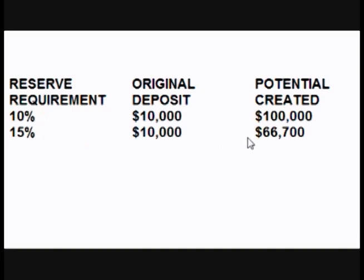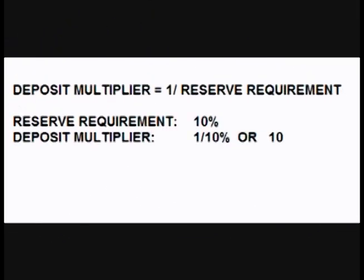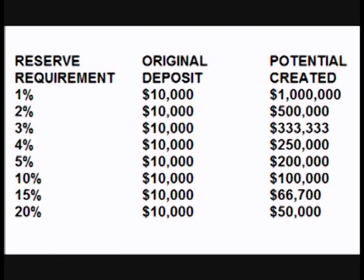Just raising the reserve requirement from 10% to 15% reduces the amount of potential money being created by a third. The amount of potential increase to the money supply is dependent on the deposit multiplier. The deposit multiplier is the reciprocal of the reserve requirement percentage. If the reserve requirement is 10%, then the deposit multiplier is 1 over 10%, or 10 — meaning you multiply the original deposit by 10 to see the potential increase to the money supply.